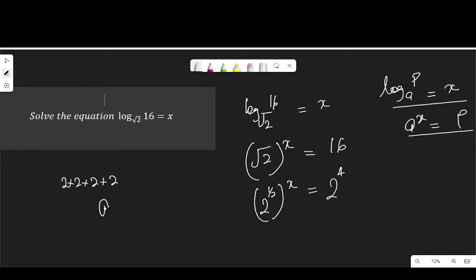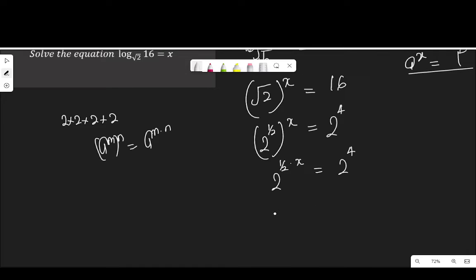Applying the law of index form that says a to the power of m to the power of n is a to the power of m times n. If I apply the law here we have 2 to the power of half times x is equal to 2 to the power of 4. And half times x is x over 2.